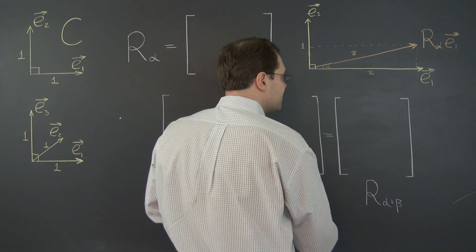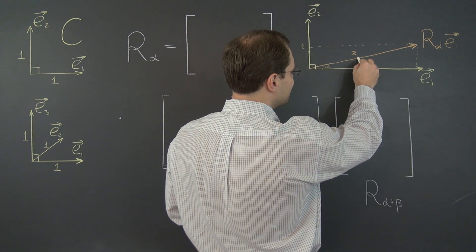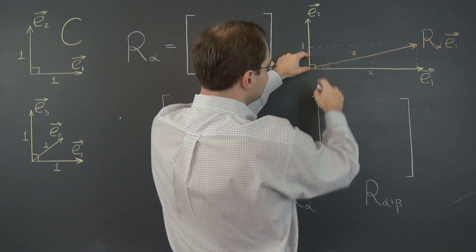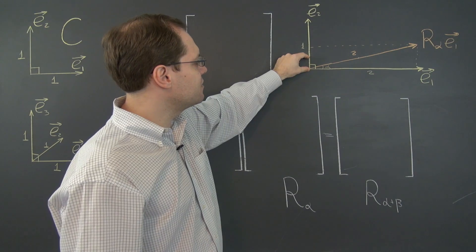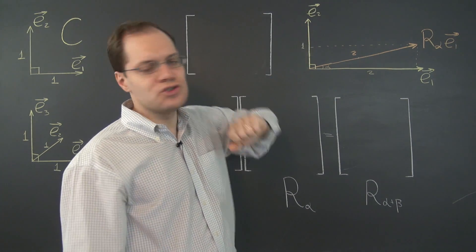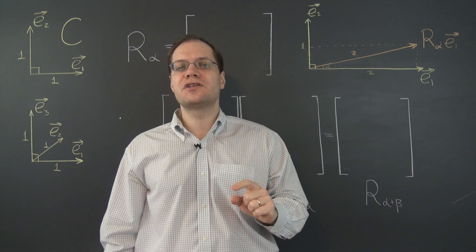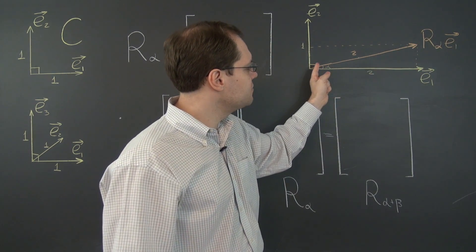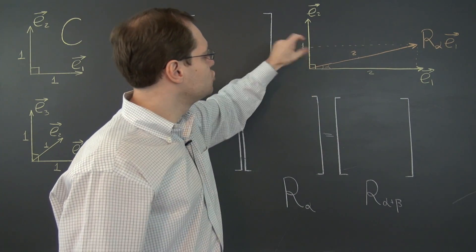But its component with respect to E2 is no longer sine alpha. It was sine alpha when this vector was half the length and we ended up right here. Okay. So when this was 1, this segment right here was sine alpha. Now it's 2 sine alpha so we need 2 of E2. So the first column is cosine alpha as you can see from this triangle and 2 sine alpha.